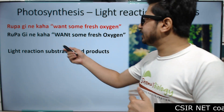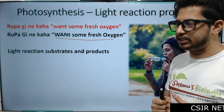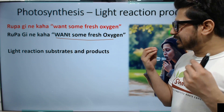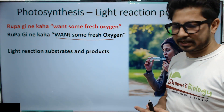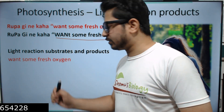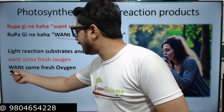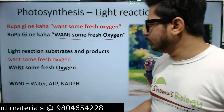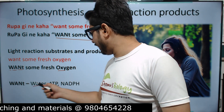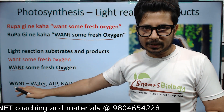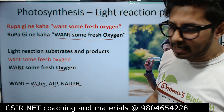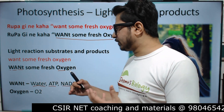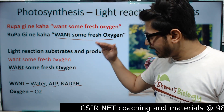The second part of the mnemonic — 'want some fresh oxygen' — gives us the substrates and products of the light reaction. Writing it out with capital letters: W is for water, A is for ATP, N is for NADPH, and O is for oxygen. So water, ATP, NADPH, and oxygen are the key outputs produced after the light reaction.